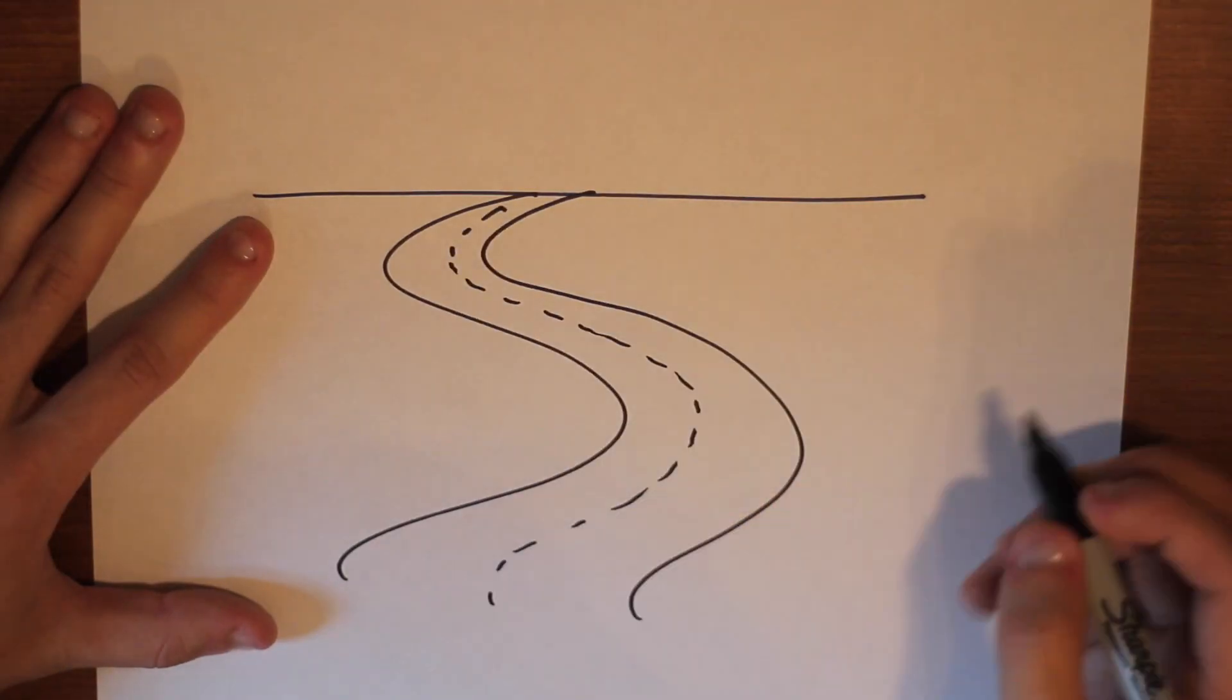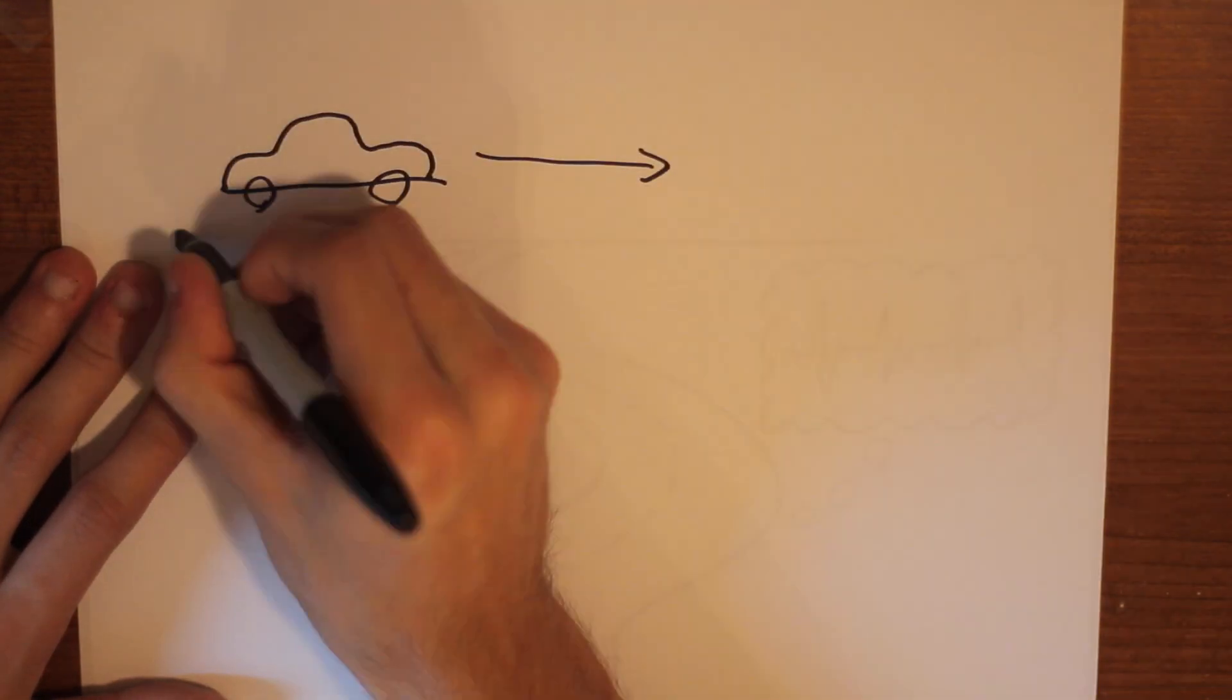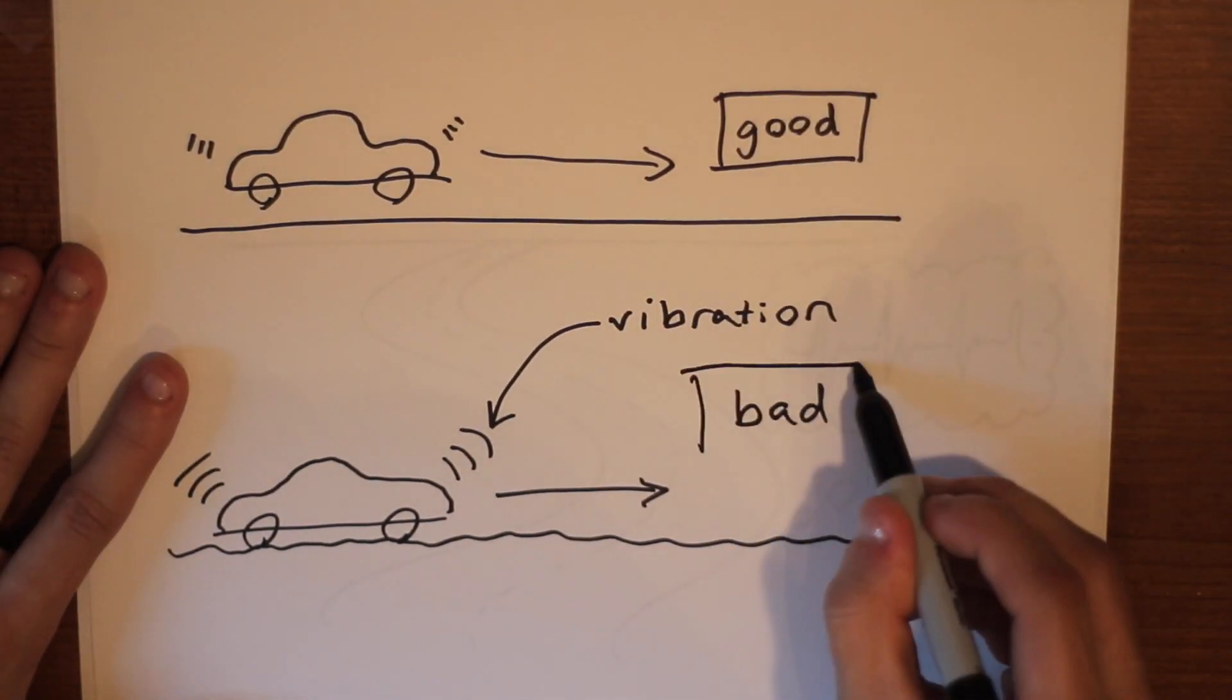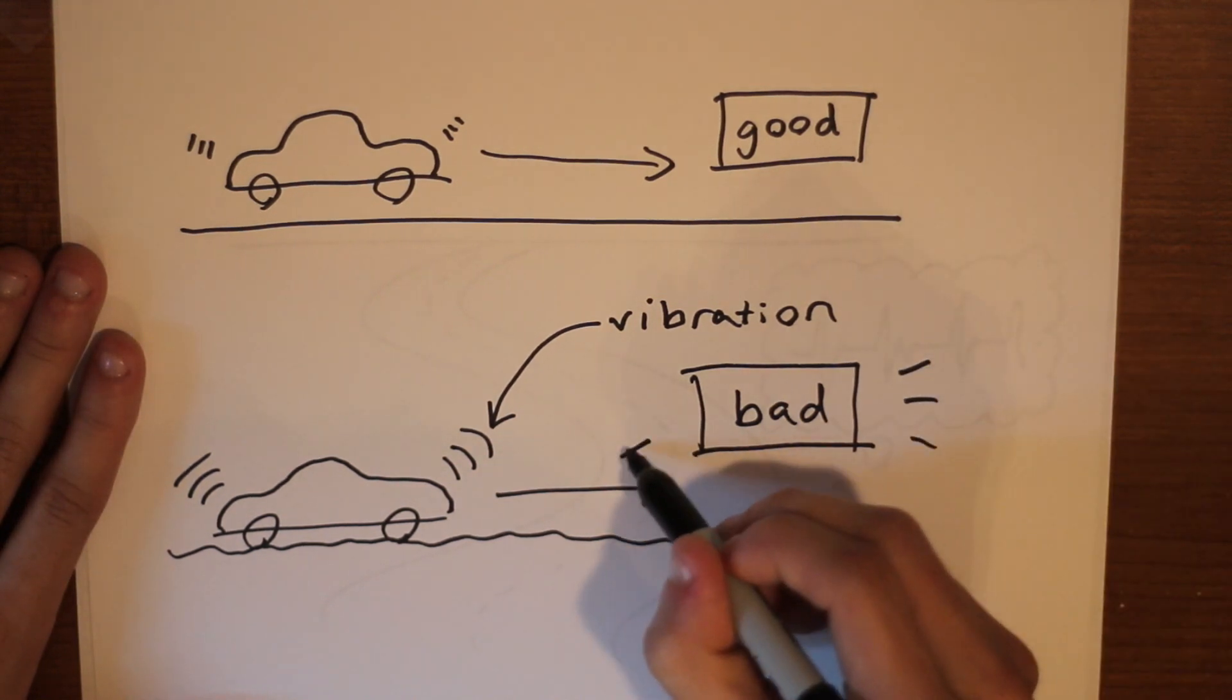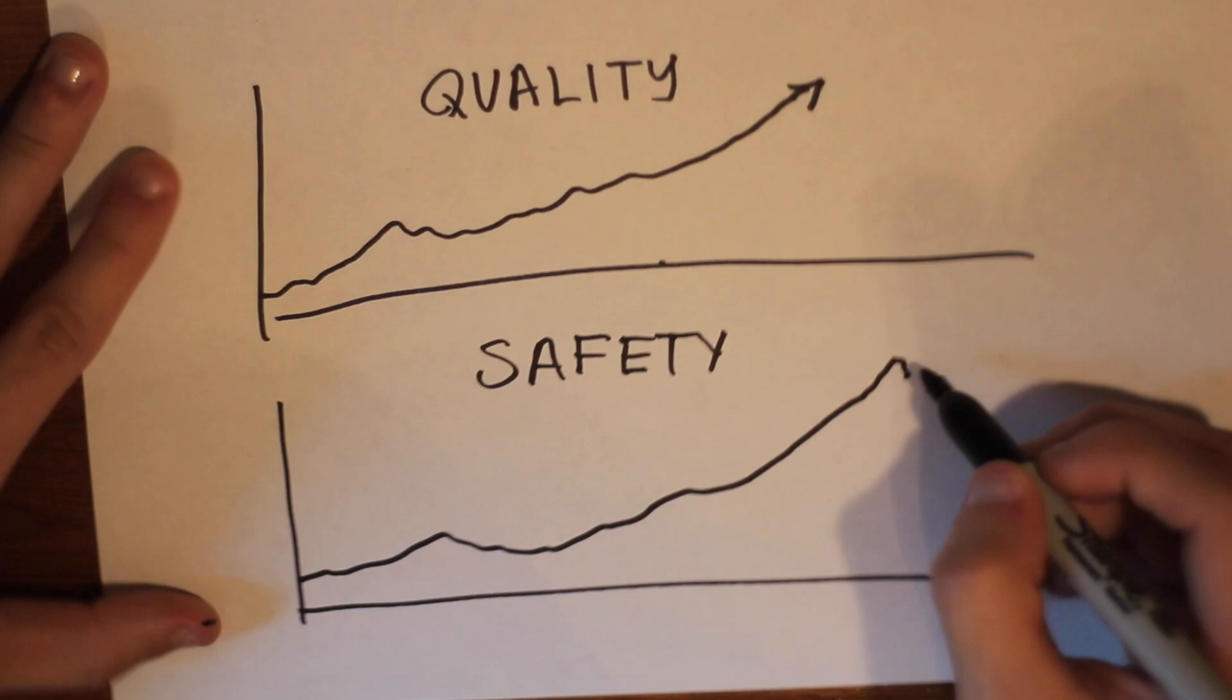Imagine a highway system that can monitor itself as it deteriorates over time. What if we installed vibration sensors in each car to analyze the bumpiness of the roads? We could compile that data to help cities monitor the overall quality and safety of their transit system.